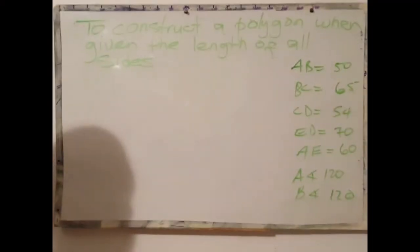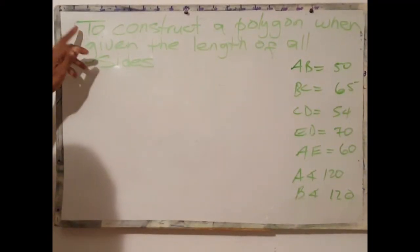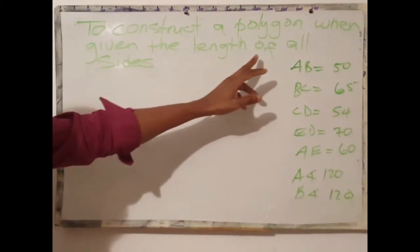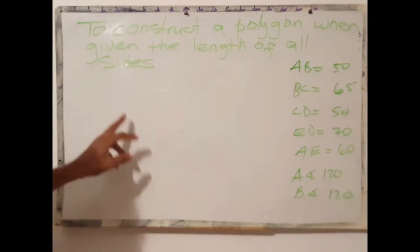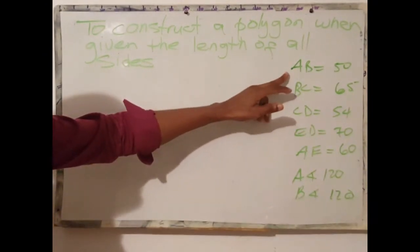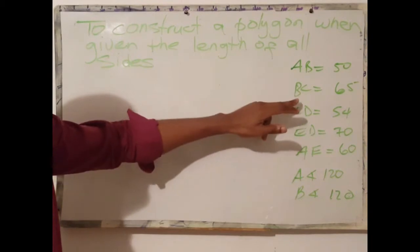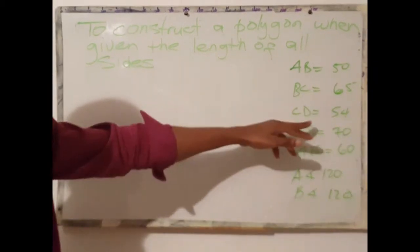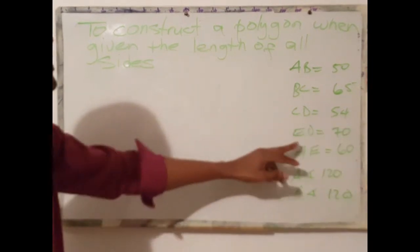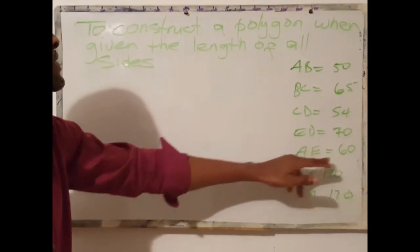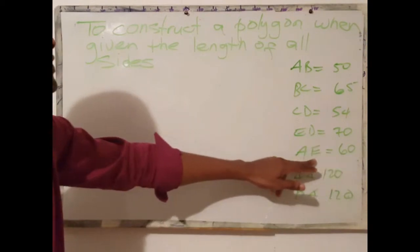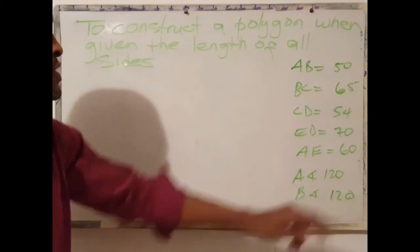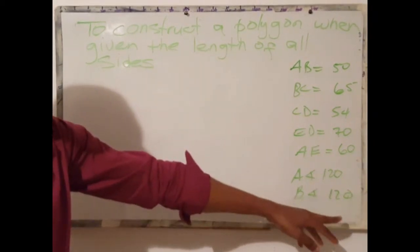We are required to construct a polygon when given the length of all sides. The given information is: AB 50 mm, BC 65 mm, CD 54 mm, ED 70 mm, AE 60 mm, angle A 120 degrees, and angle B is also 120 degrees.